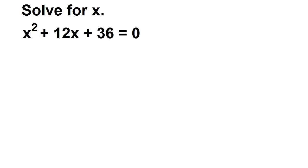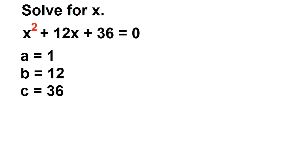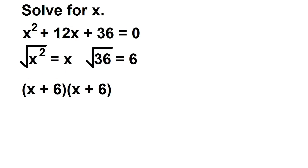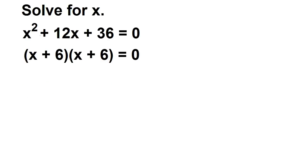Solve for x: x² + 12x + 36 = 0. This is in standard form where a = 1, b = 12, and c = 36. The expression on the left side is a perfect square trinomial. Find the square root of x² (which is x) and the square root of 36 (which is 6). The factors are (x + 6)(x + 6). Since the factor is repeated, set x + 6 = 0, giving x = −6.